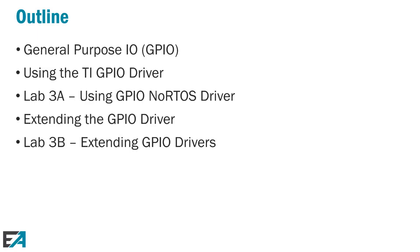The outline for this chapter is: we'll start by taking a look at general purpose IO, or GPIO. Then we'll look at the driver we can use to configure and manipulate the GPIO. In Lab 3A, we're going to use that GPIO driver to create the blinking LED we just talked about. Then we're going to look at extending the GPIO driver. The GPIO driver is configured for the board we're using, and by default most boards have more than two LEDs, but the TI solutions provided in the SDK examples only support two. So extending here is really just how we can make use of a couple more LEDs, and it helps us dig through the driver code to understand how it's set up and configured for a board.